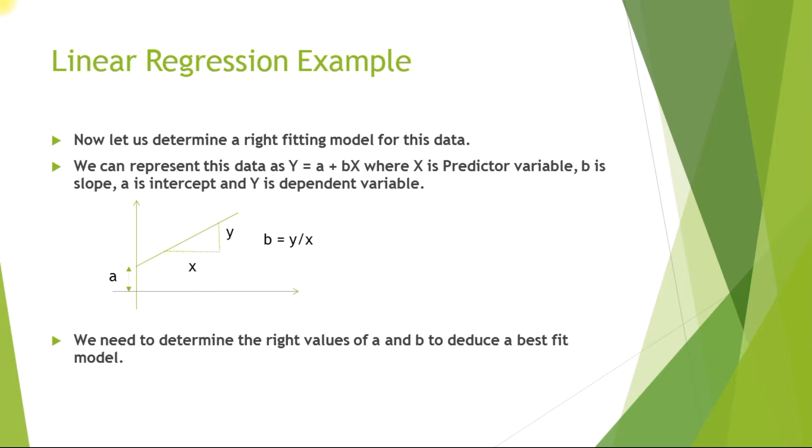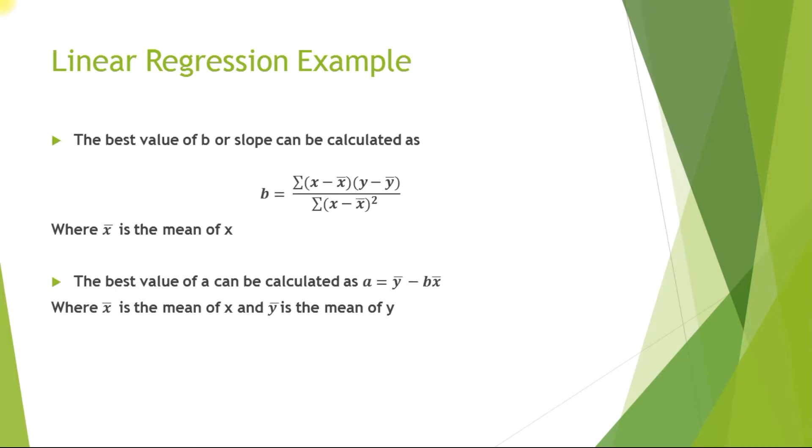Now let us see how we can deduce the value of a and b. b is represented by this equation that is shown here. As in this equation, we first find out the mean value for the x values and the mean value for the y values. Then for each of the data point, we find x minus x mean and y minus y mean. Then we take a product of it and sum all of the products obtained. In the same way, for each of the x values, we find x minus x mean, square it, and take a summation of all. Then we divide both the values to find b.